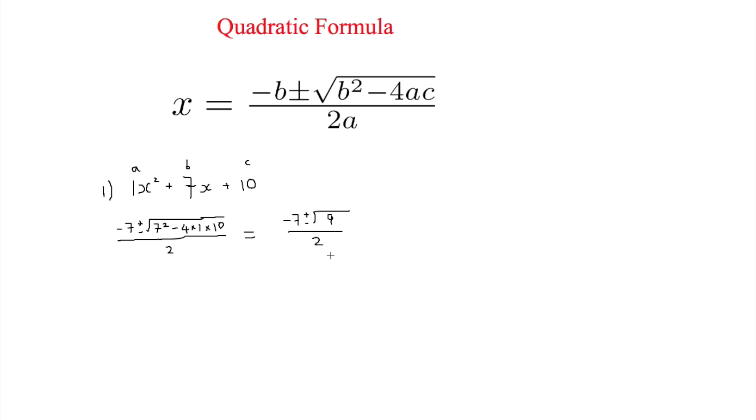This simplifies to negative 7 plus or minus 3, all over 2. This gives you two answers: negative 7 plus 3 equals negative 4, and negative 4 divided by 2 equals negative 2. That's one answer.